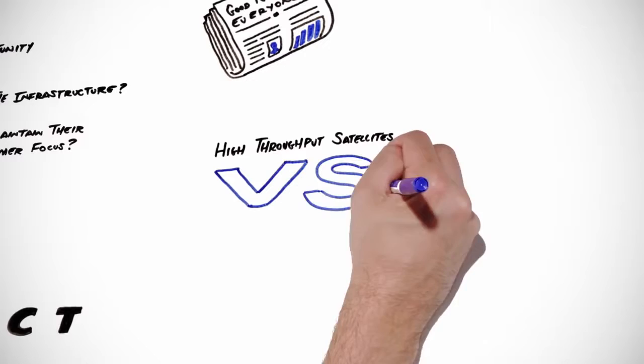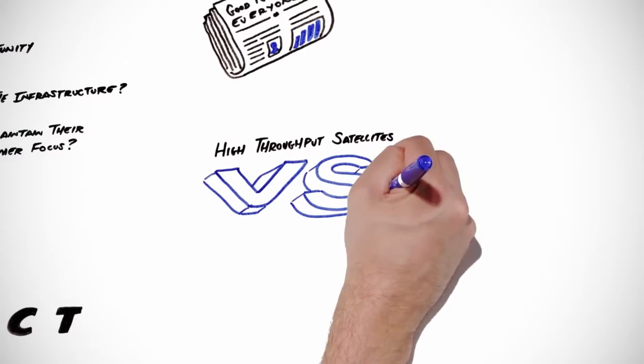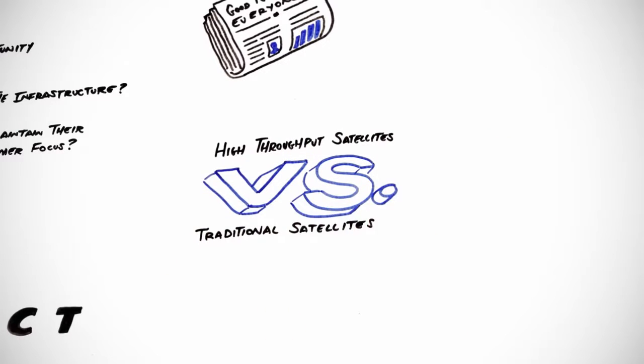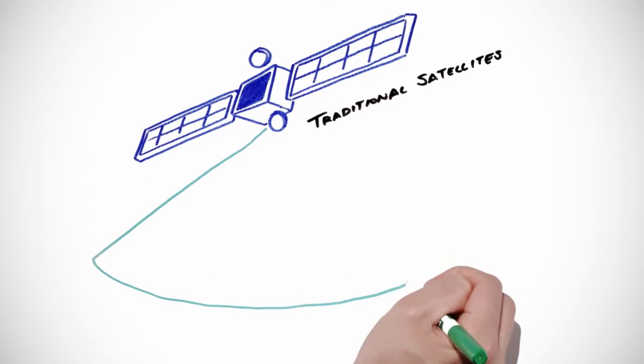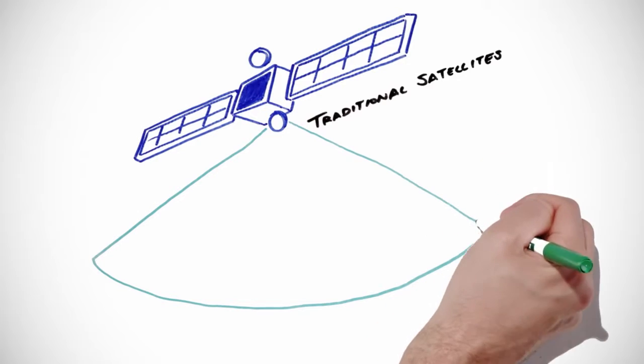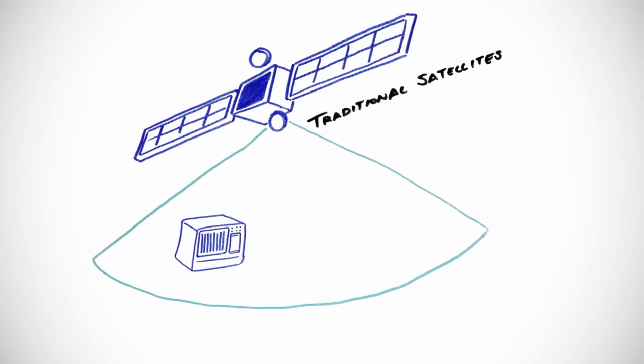High throughput satellites are fundamentally different in terms of design and ground segment requirements from traditional satellites. Traditional satellites use large regional beams that cover an entire footprint with fixed capacity. Any service provider can own a hub and teleport and offer services to customers as long as they're in the satellite footprint.